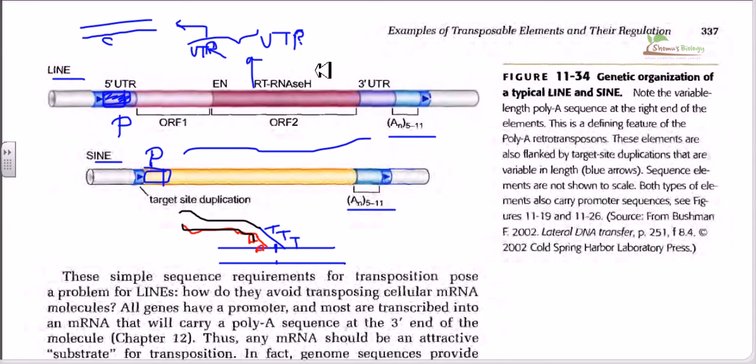So the Open Reading Frame 2 codes for the protein which has both reverse transcriptase and RNase H activity, which is actually acting as endonuclease to cleave the strand at the target site, and then it is also helping to produce the DNA or complementary DNA sequence from the mRNA sequence.